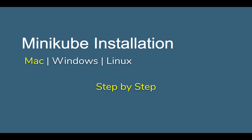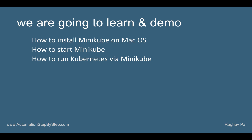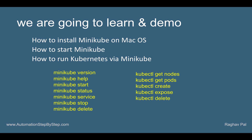I will also show you on Windows and Linux in the coming sessions. However, if you are using Windows and Linux, you can still watch this so that you will come to know a lot of information about Minikube and a lot of commands that we use. So in this session, I am going to go very basic from scratch, step by step, and we will see how to install Minikube on Mac, how to start Minikube, and then how to run Kubernetes via Minikube. These are some commands that we will see and run and learn during the session.